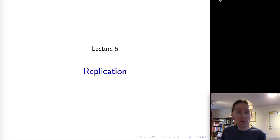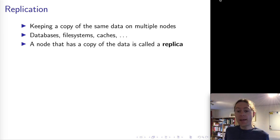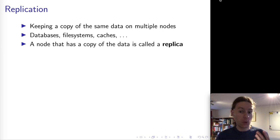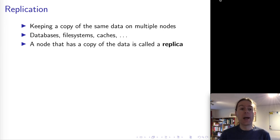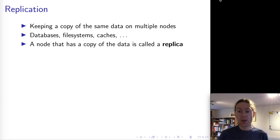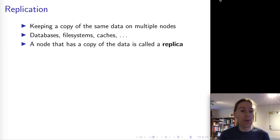Welcome to Distributed Systems Lecture 5. Today we will be talking about replication. Replication simply means having a copy of the same data on multiple nodes in the distributed system. Replication is very widely used - for example, many distributed databases use replication as part of their normal setup, many distributed file systems allow you to have a copy of files on multiple different nodes, and many caching systems are essentially forms of replication. We're going to be talking about algorithms that fit all of those types of systems.